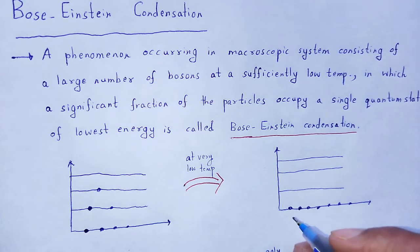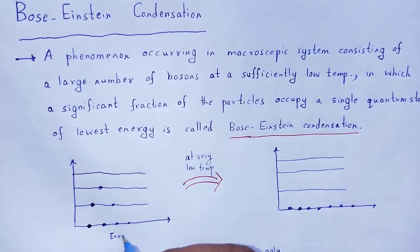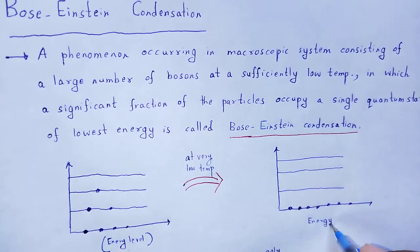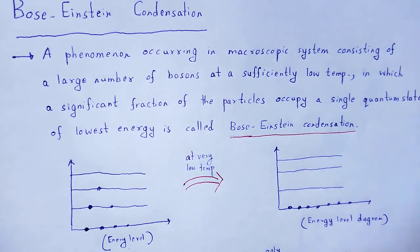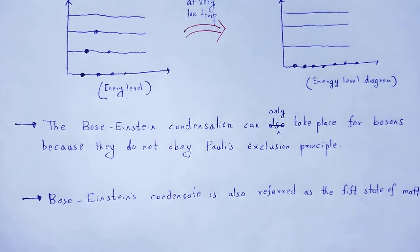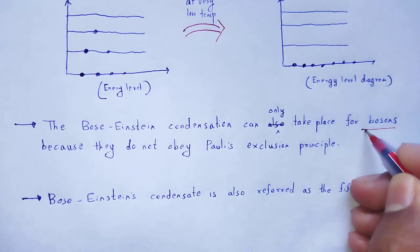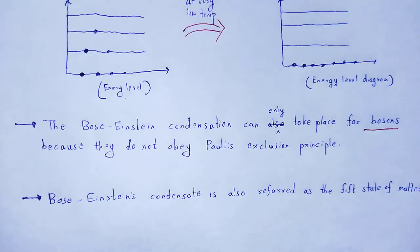At very low temperature, the population increases in the ground state. This is shown in the energy level diagram. That type of phenomenon is called Bose-Einstein condensation, and it can only take place for bosons. The cause is that bosons do not obey Pauli's exclusion principle, they have zero or integral spin, and they obey Bose-Einstein statistics. These are the basic causes.